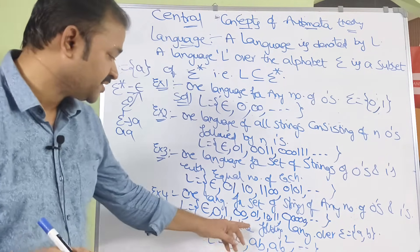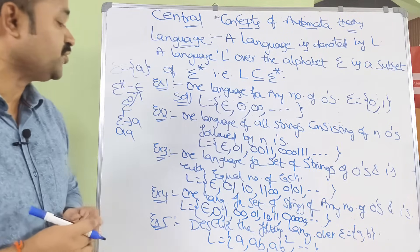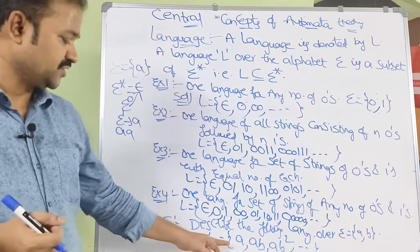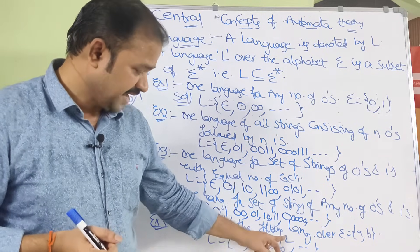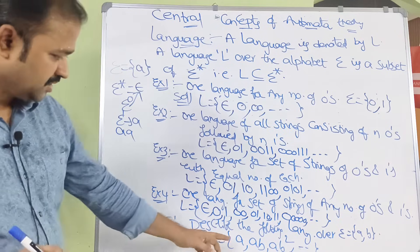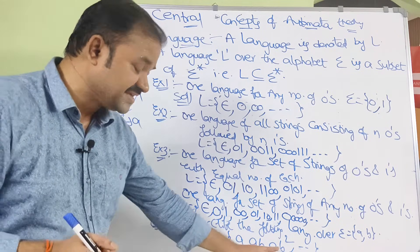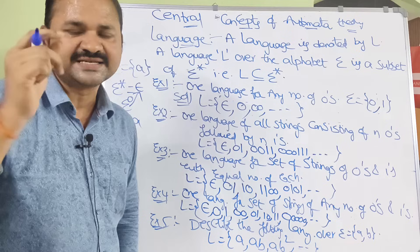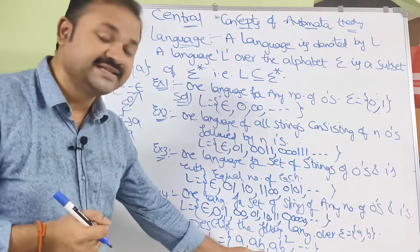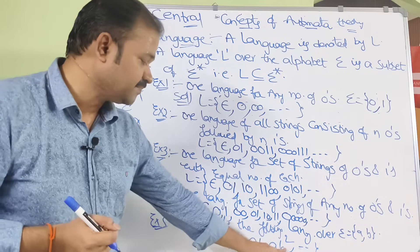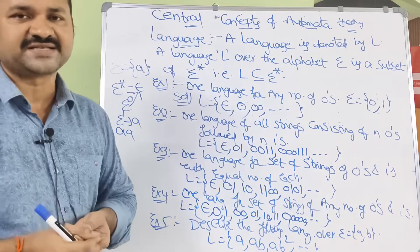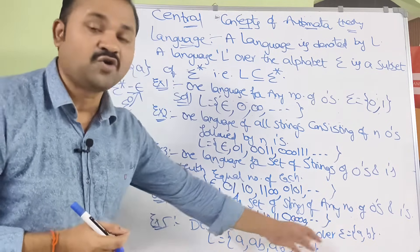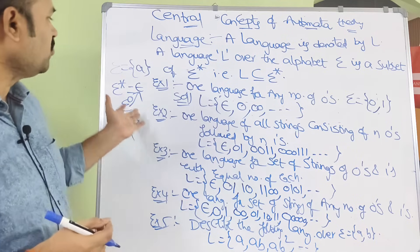Fifth example: describe the following language over sigma = {a, b}. The language L = {a, ab, ab², ...}. Every string starts with a. The first string has zero b's, the second string has one b, the next has two b's. So the language is the set of strings starting with a followed by any number of b's.